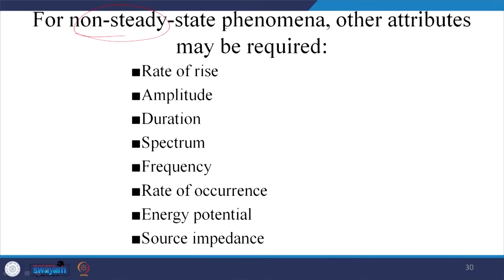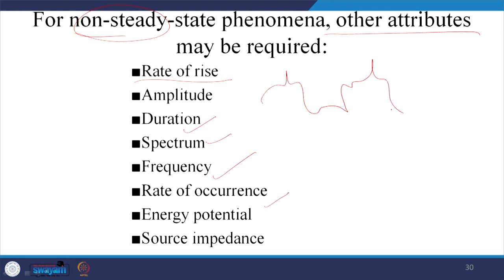For non-steady-state phenomena, other attributes apply to transients: rate of rise (e.g., when charging a capacitor), amplitude, duration, spectrum, frequency, rate of occurrence (such as a notch edge every 5 cycles), and energy potential — how much energy is associated with the transient. A very high voltage spike of short duration may have low energy potential. Source impedance also plays an important role in the rise time of these events.